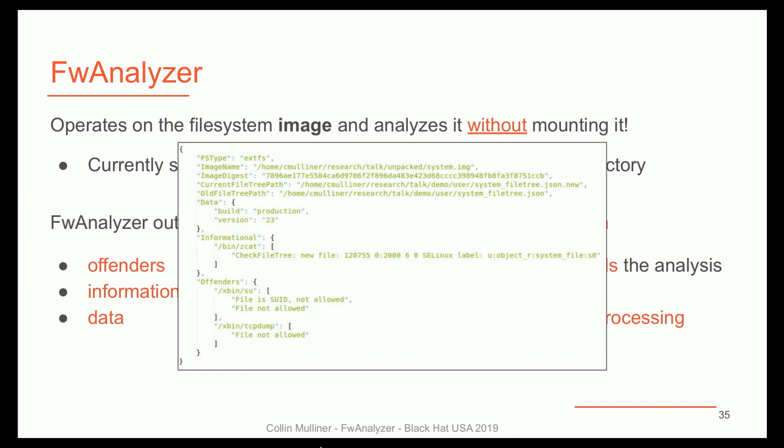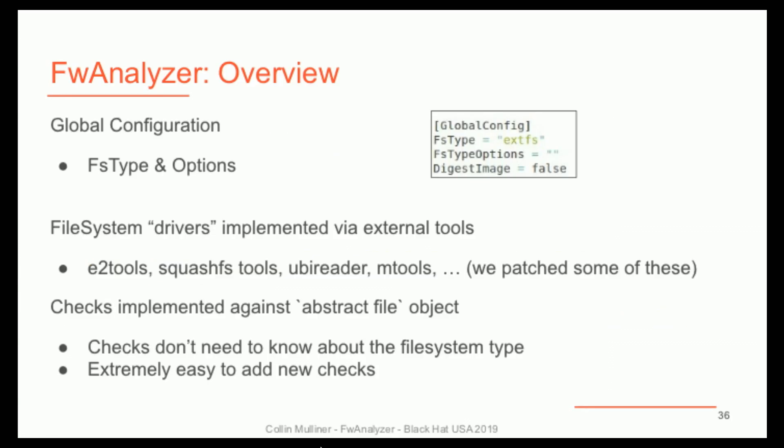Here's a simple example output — going from top to bottom, you see the file system type was ext, you have the full name of the image, the digest, and then you see data such as build information, versioning information, some informational entries, and a few failed checks. When you start building a configuration, the global config basically has a file system type, some options for that, and you can select your driver. All the file system drivers are implemented using common open-source tools, so we don't actually have to implement file system parsers. Internally, every check is run against an abstract file — we have a virtual file system inside the tool, so checks don't need to know anything about the file system type, and it's extremely easy to add new checks.